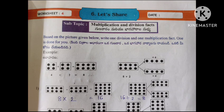Worksheet 4: Based on the picture given below, write one division and one multiplication fact. One is done for you. Count the dots/objects shown and use them — do it in this format to get the answers.